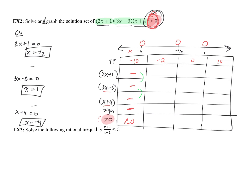Checking negative 2: plugging into 2x plus 1 gives negative 4 plus 1, still negative. Into 3x minus 3 gives negative 6 minus 3, still negative. Into x plus 4 gives negative 2 plus 4, which is positive. Negative times negative is positive, then positive times positive is positive. Is positive greater than 0? Yes — so that interval is part of our solution.